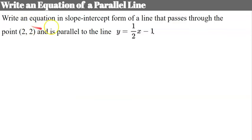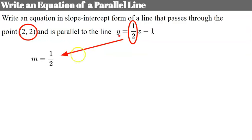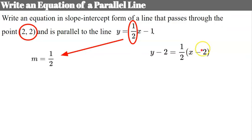You may be asked to write the equation in slope-intercept form of a line that passes through a point and is parallel to a given line. Since parallel lines have the same slope, the new line passes through the given point and has the same slope — 1 half. We'll use point-slope form: y subtract the y-coordinate equals the slope multiplied by the quantity x subtract the x-coordinate.